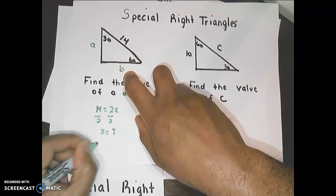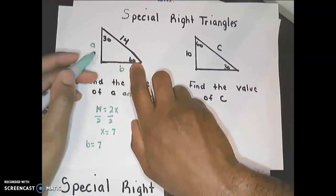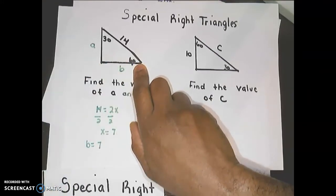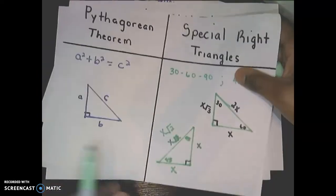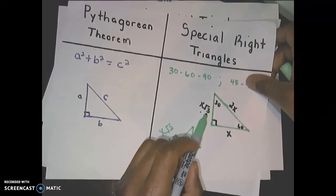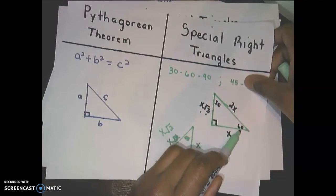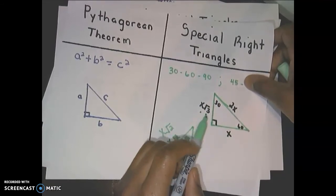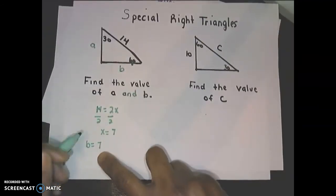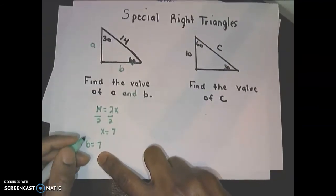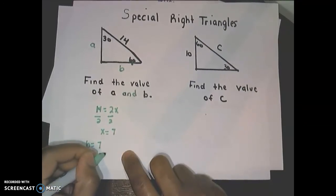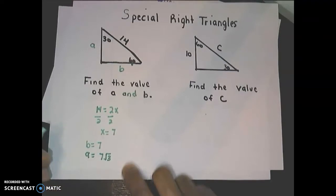To get the value across from 60, you take the value of X and place it in front of the square root of 3. Since X is 7, the value of a is 7 times the square root of 3, and we're done.